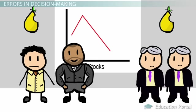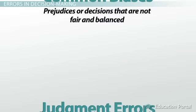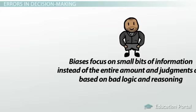Common biases are prejudices or decisions that are not fair and balanced. Judgment errors are business errors or mistakes that occur due to poor decision making. In other words, biases focus on small bits of information instead of the entire amount, and judgments are based on bad logic and reasoning.